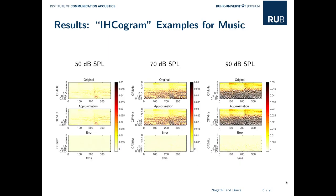As a result, we see time-frequency representations of the inner hair cell potential for a test music signal at different sound pressure levels. We call these representations IHC-grams, in analogy to spectrograms. At all sound pressure levels, the WaveNet-based approximation yields highly accurate predictions of the original auditory model output. It should be noted that this is possible at a sampling rate of only 16 kHz, whereas the original model has to be operated at a sampling rate of at least 100 kHz, which reduces the computational complexity considerably.